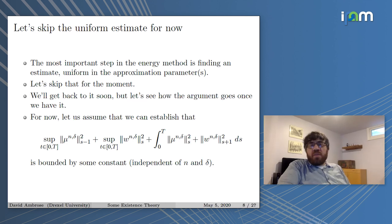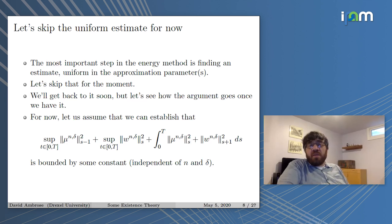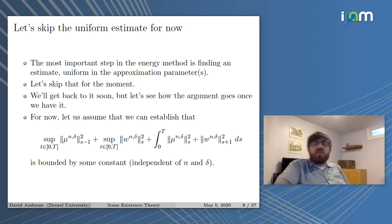That's the first couple steps of the energy method: we've introduced the approximate problem and solved it. The next step is the uniform estimate — that is the heart of the matter. I'm going to skip that for right now so I can spend most of the time at the end of the talk on it. For now I'll just say what we do after we have the uniform estimate, and then come back to it.